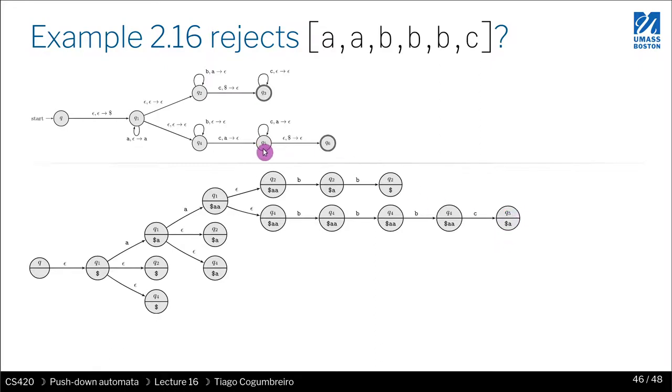But now we are on Q5. Our stack still has an A. It cannot transition to the final state. So it also is unable to get there. It gets stuck in Q5. And that's why the string is rejected.